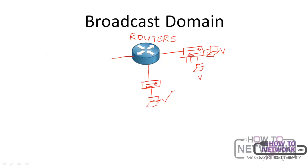Another reason why we segment broadcast domains is for bandwidth. For instance, if we have about 1,000 users in a particular network and they are all on the same broadcast domain, even legitimate broadcasts will always eat up most of the bandwidth and can slow down resources for all 1,000 users. There are many cases where we use broadcast — for instance, we use broadcast for things like ARP, the Address Resolution Protocol, which we will talk about in the next video.